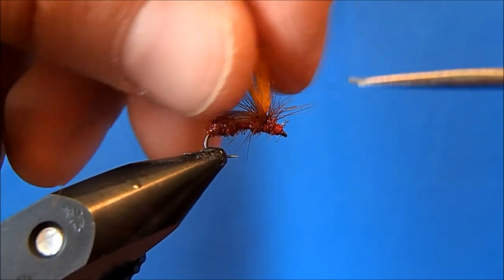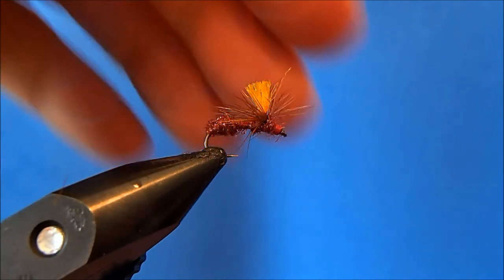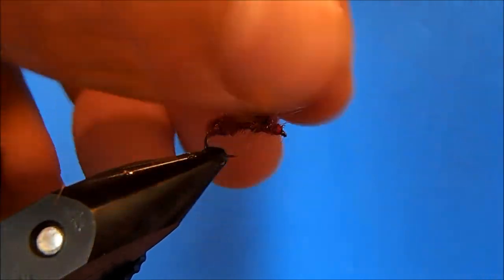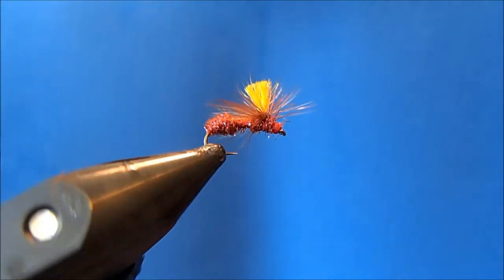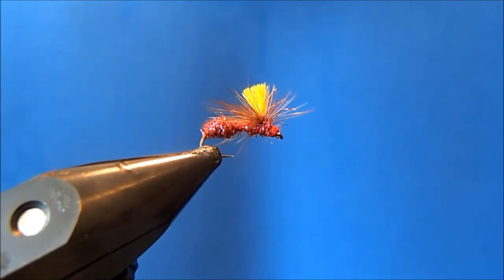Finally, just cut the post to the desired height, and you're all set. That is my high-vis parachute ant.